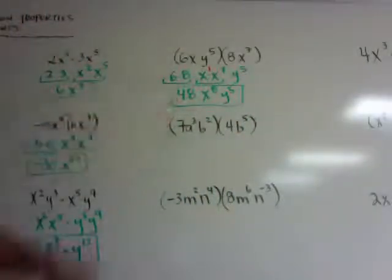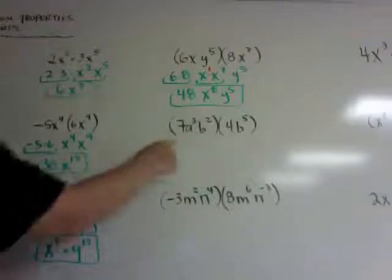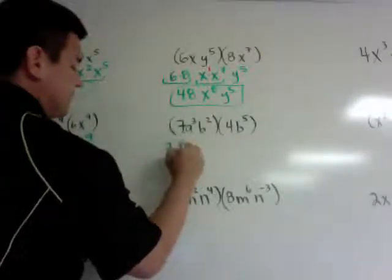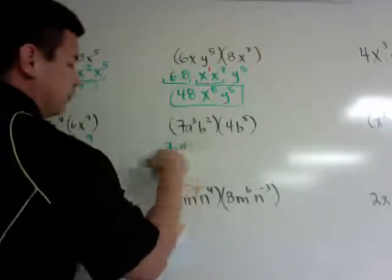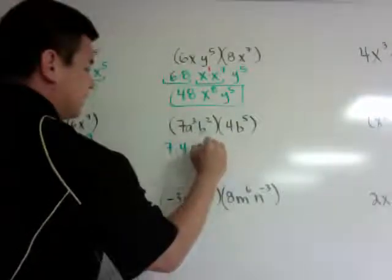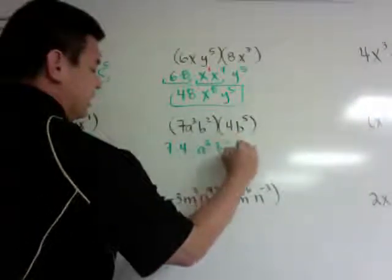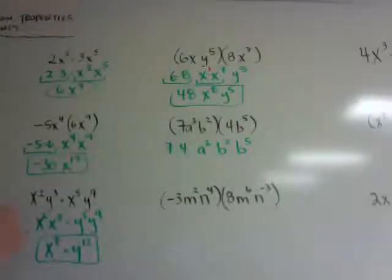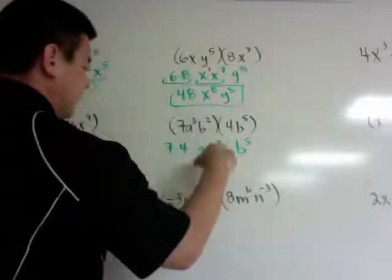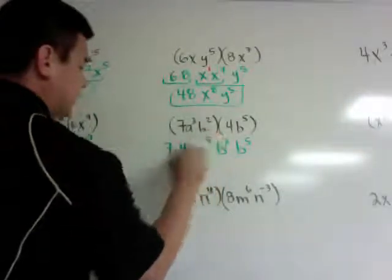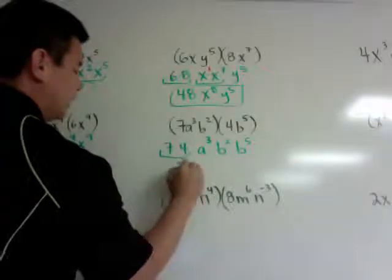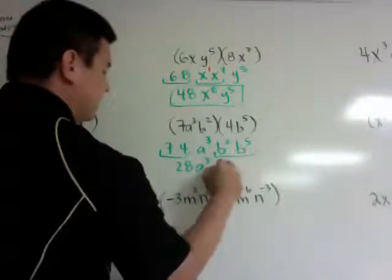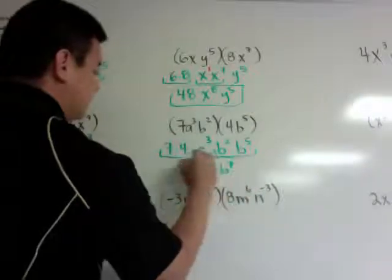The coefficient is the number that goes first, then variables in alphabetical order. Here's another one: 4a³b² times 7b⁵. Just move them around — 4 times 7 and then a to the third, b squared times b to the fifth. This becomes 28a to the third, and b squared times b to the fifth is b to the seventh power.